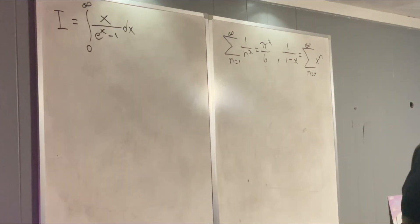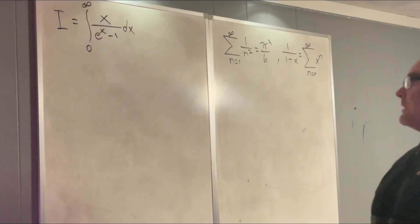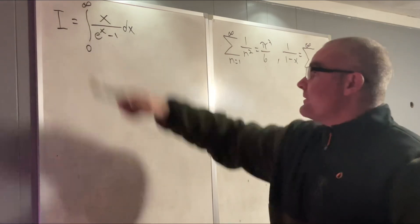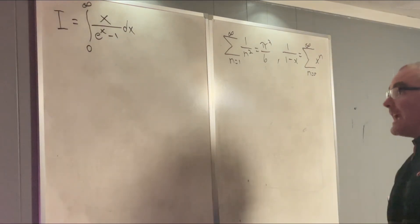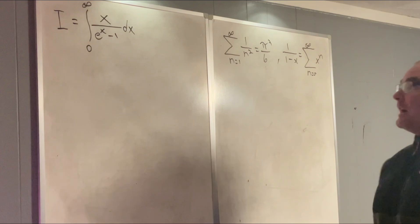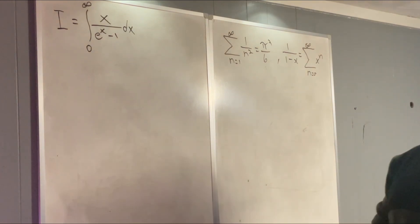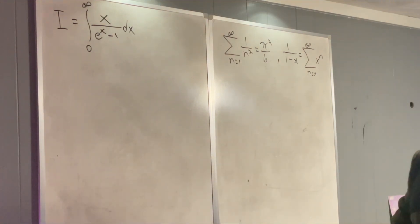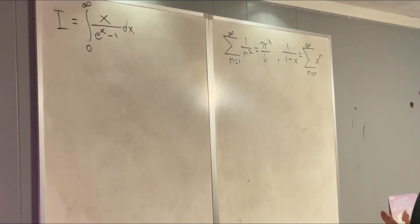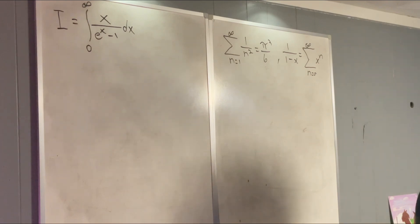Hi everybody, welcome back to my channel on Feynman integration. Today we'll be evaluating this integral — the integral from 0 to infinity of x over (e^x minus 1) dx. I am borrowing this integral from the channel Maths505. I'm going to be solving it in a slightly different way than he did, but let's just get started.